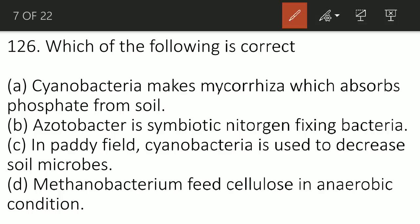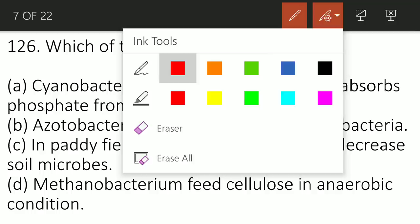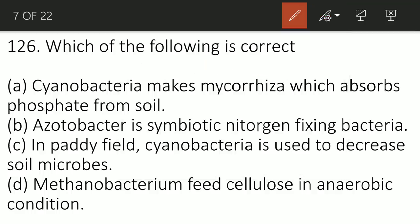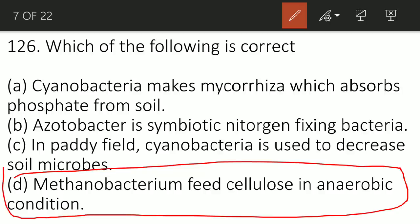Which of the following is correct? The correct option is option number D which says Methanobacterium feed cellulose in anaerobic condition. What are cyanobacteria? They are phototrophic and naturally occurring in some ecosystems. They are naturally growing like in paddy fields.